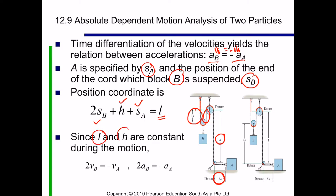Now, since L and H are constant during the motion, differentiated against time, we are going to only get 2VB minus 2VA. Also, 2AB equals minus AA.